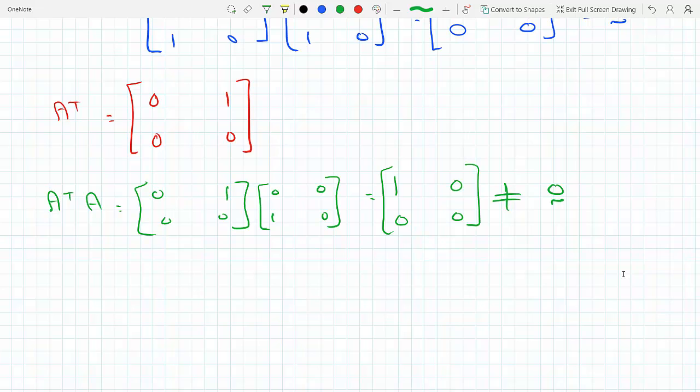So the only way we can get zero is if the dot products of these columns is zero. This means either the matrix has to be a zero matrix or the columns of A have to be zero.